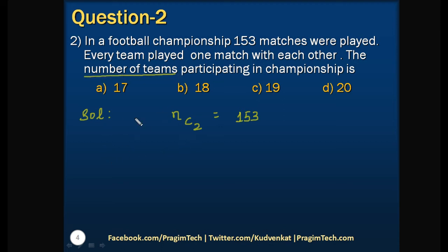So in order to calculate this, let us use the definition of NC2 which is given by N factorial divided by 2 factorial into N minus 2 factorial equals 153. Here N factorial we can write it as N into N minus 1 into N minus 2 factorial, divided by 2 factorial is 2 into N minus 2 factorial. This is equals to 153.